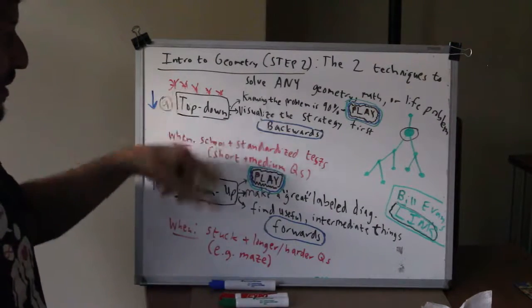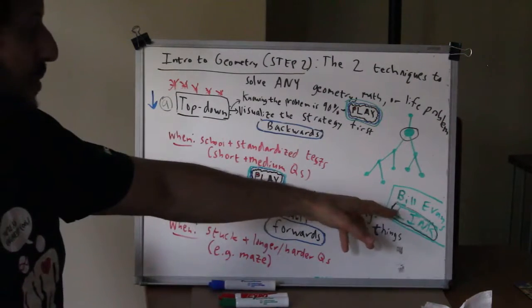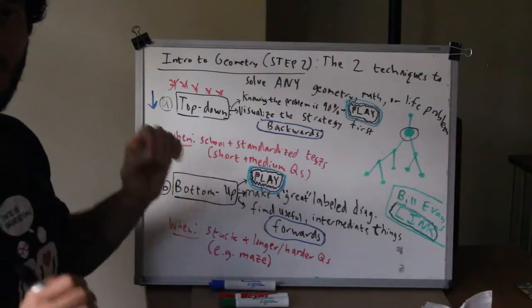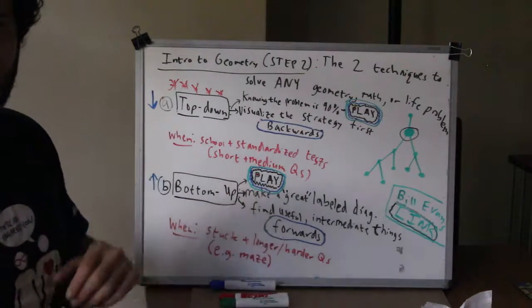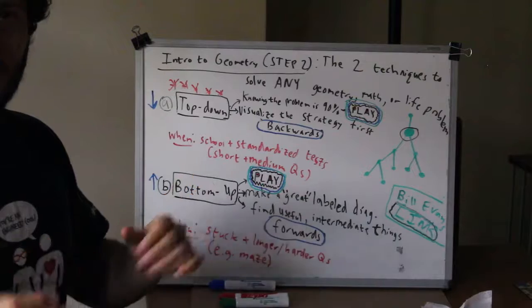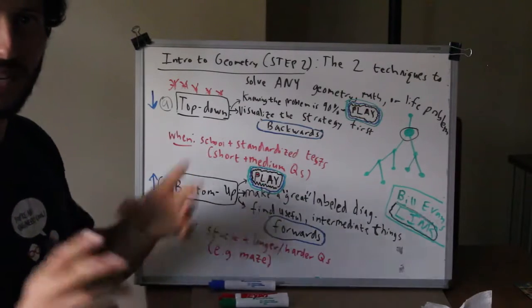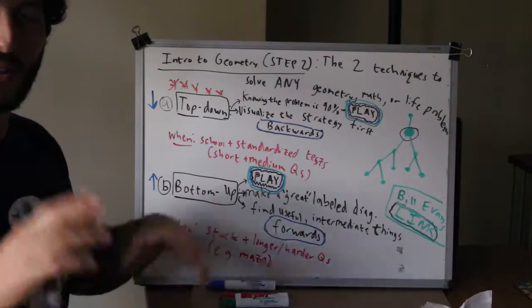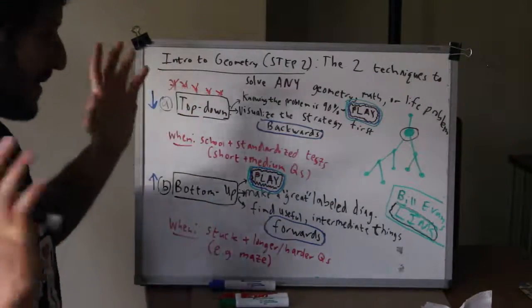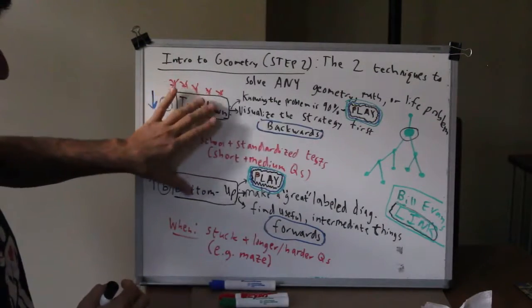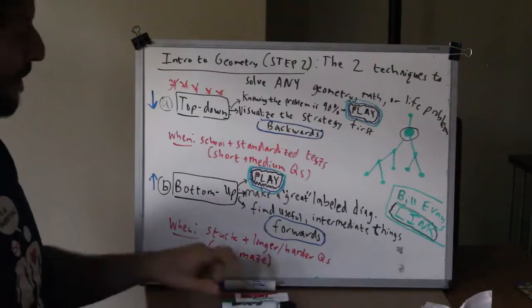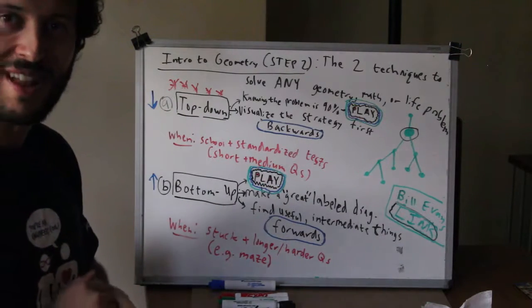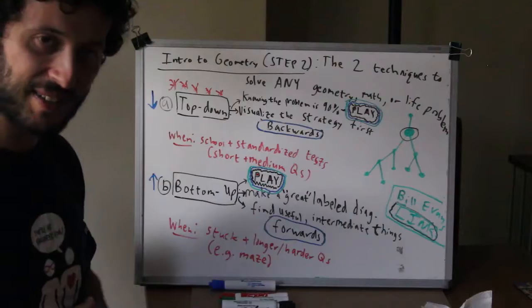So next time you have a problem, don't just randomly jump into one of these approaches or a middle approach. Think what would be best for this problem, for this math problem, this geometry, for this English essay, this reading comprehension, for your life issue. Your boyfriend or girlfriend left you, whatever it is, doesn't matter. Think which of these approaches or a middle approach is more appropriate. Hopefully that was helpful. I will see you guys in the next video.